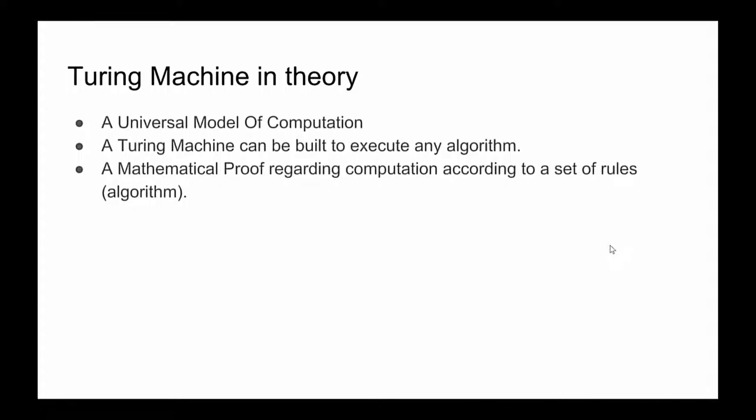So the universal model of computation is anything that can be used to solve any computational problem—anything that can be used to describe a solution to a computational problem. A Turing machine is important because it fits that bill. It can be used—a Turing machine can be built to solve any, to execute any algorithm. And it is mathematical proof regarding computation according to a set of rules. A set of rules is the execution of steps to compute the algorithm. Those rules can vary depending on the Turing machine. He didn't describe a single machine. He described a set of rules for something that would qualify your idea as a valid Turing machine.